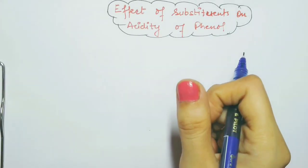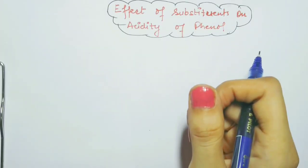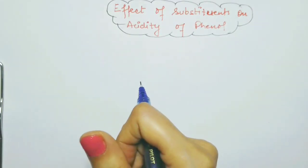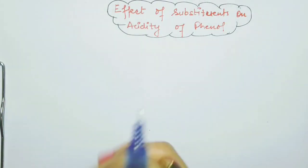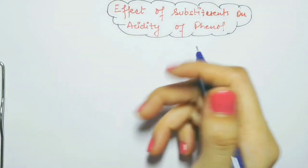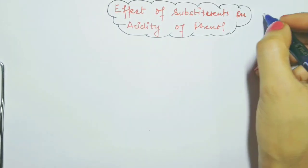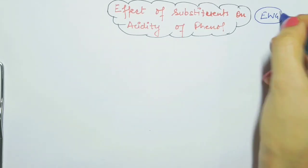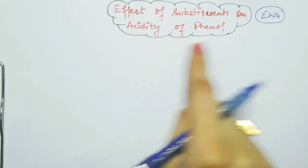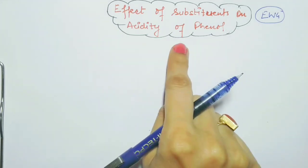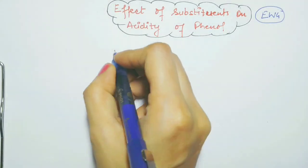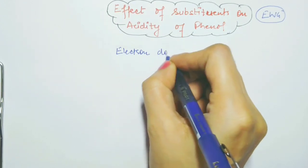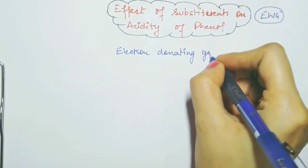Hello learners, back again. In the last video we discussed about the effect of substituents on acidity of phenol — first the acidity of phenol itself, then the effect of substituents, and lastly the electron withdrawing group effect on acidity of phenol. Today we will be taking the electron donating group.